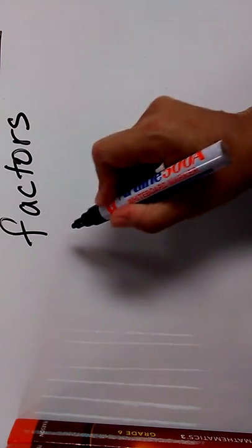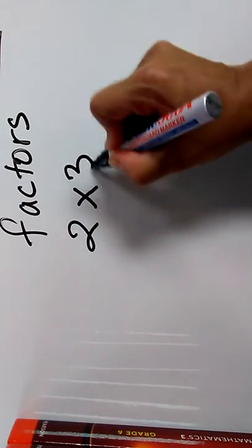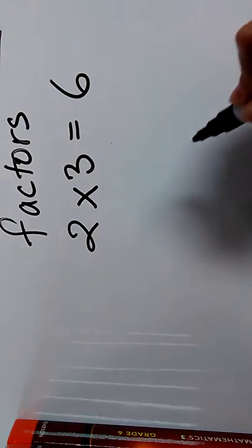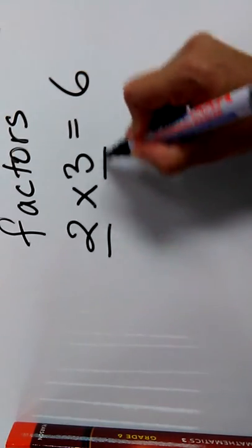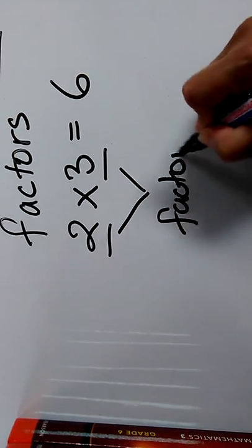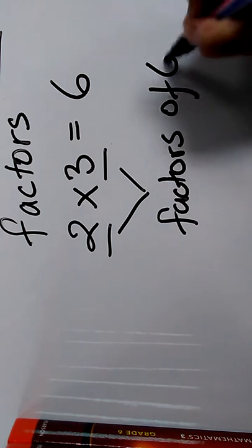For example, if we look at 2 times 3 equals 6, we know that 2 and 3 are factors of 6.